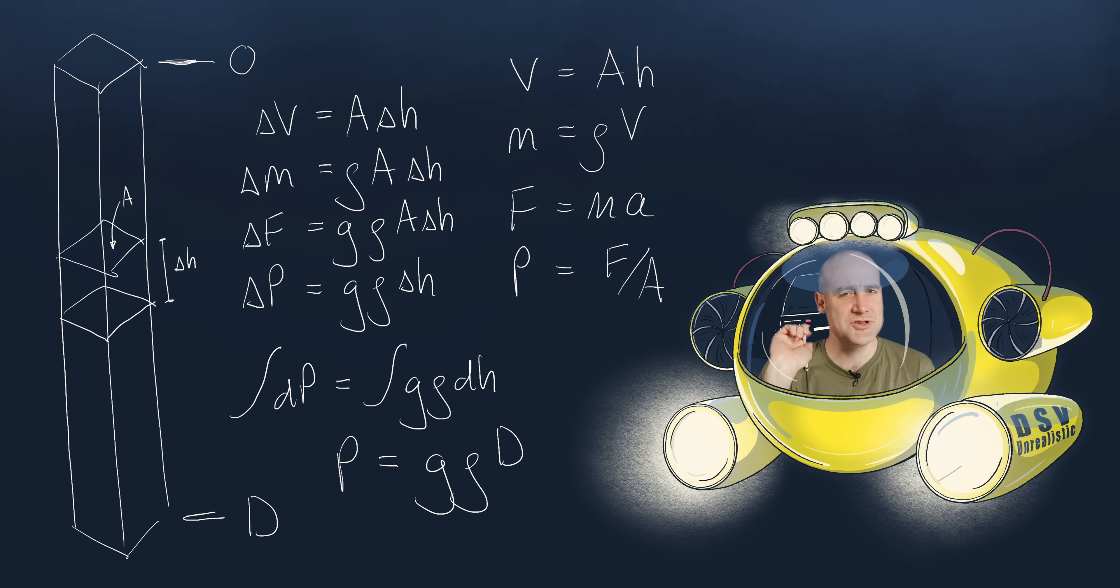Now to get it for the entire column we just integrate the whole way down. So we integrate one side dp equals, integrate the other side, g rho dh. I'll switch to d just to mean, you know, infinitesimal, like absolutely tiny. And actually g and rho, if they're constants, then that's a dead easy integration. We just get that pressure equals gravity times density times the total depth d. And we're done.